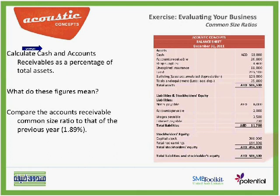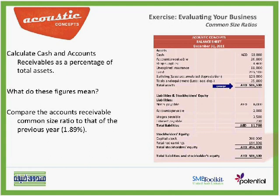Cash amounts to 68,000 dirhams. The total assets is 506,500 dirhams. So in order to calculate a common size ratio for the cash as a percentage of assets, all we have to do is 68,000 cash over 506,500 dirhams. This gives 13.42%, meaning that 13.42% of Acoustic Concepts' assets are in cash.